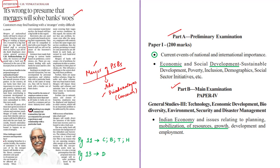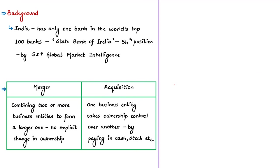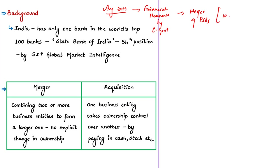Towards the end of August 2019, the central government announced a slew of financial measures to revive growth in the Indian economy. One such announcement was the merger of certain public sector banks. On 30th August 2019, the central government announced the merger of 10 public sector banks into four big public sector banks — this was discussed in detail in the 31st August Hindu news analysis.